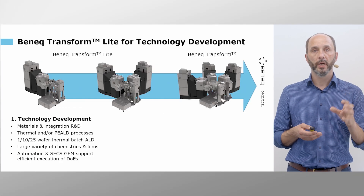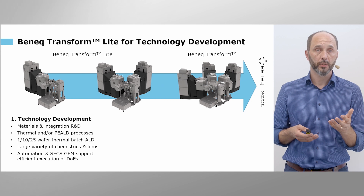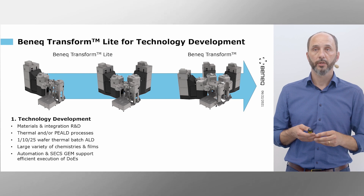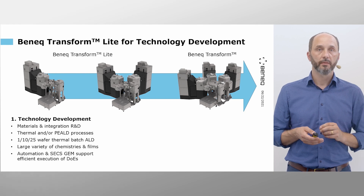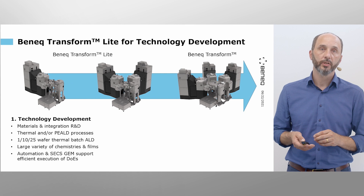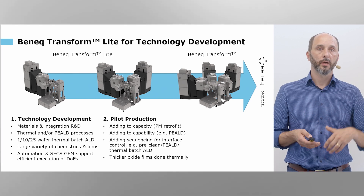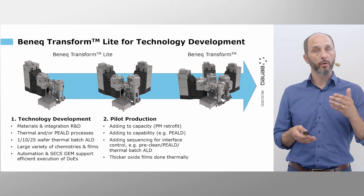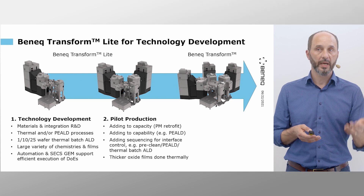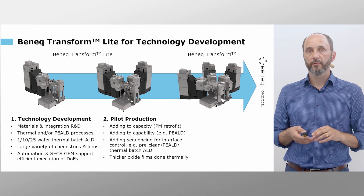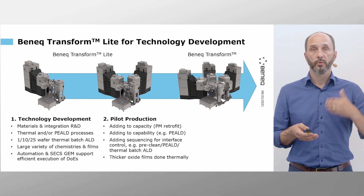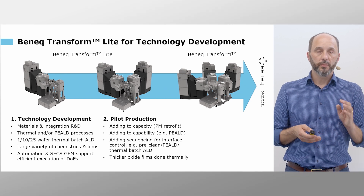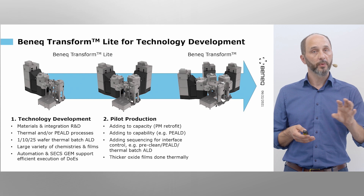With the plasma module you may combine plasma as well as thermal processes, so those oxides are also available on the plasma module as a thermal operation. Having developed a specific film and application, you may then move forward to a pilot production regime where the Transform Light platform allows you to add more capability and capacity. With this combination of plasma and thermal, you may also add sequencing: pre-cleaning, nitride deposition, and thermal deposition. So Transform Light can walk you through from the technology phase all the way to pilot.